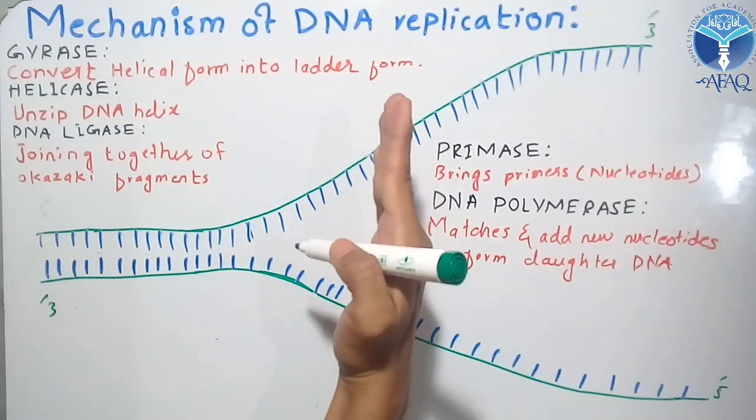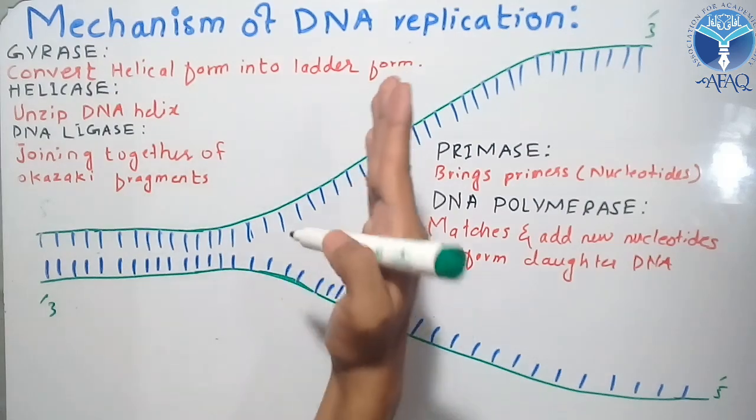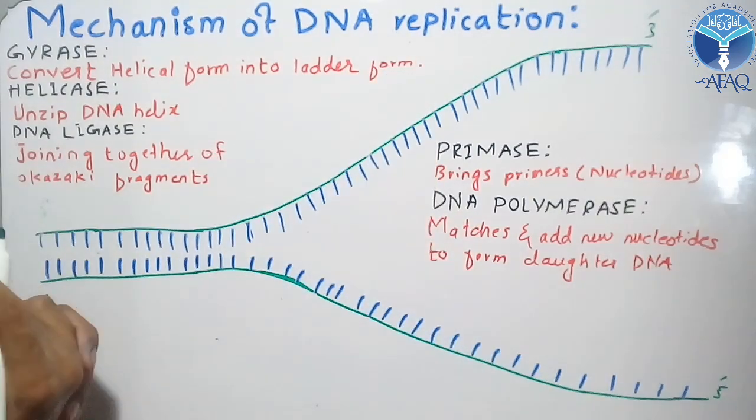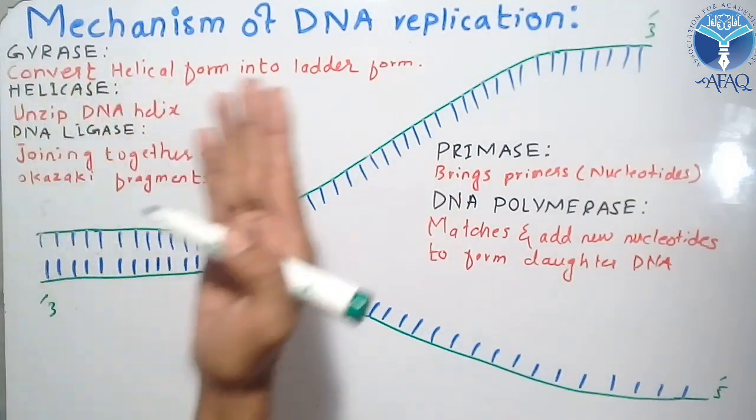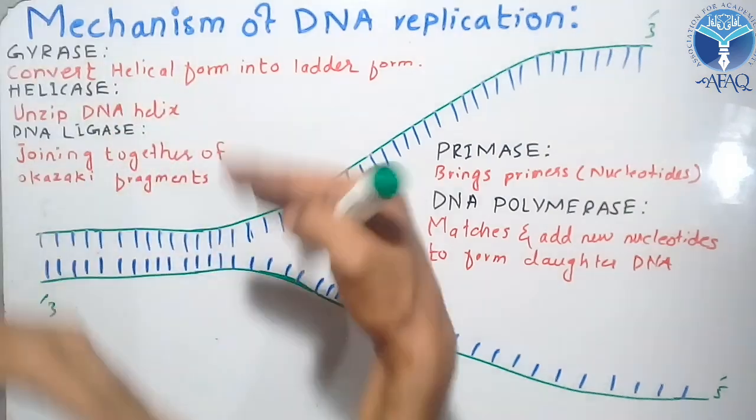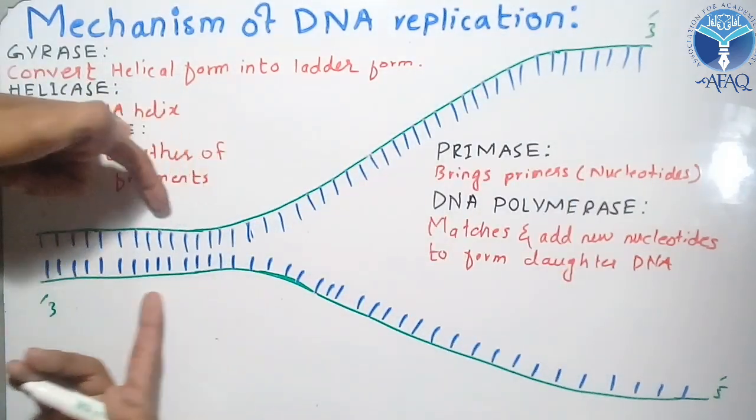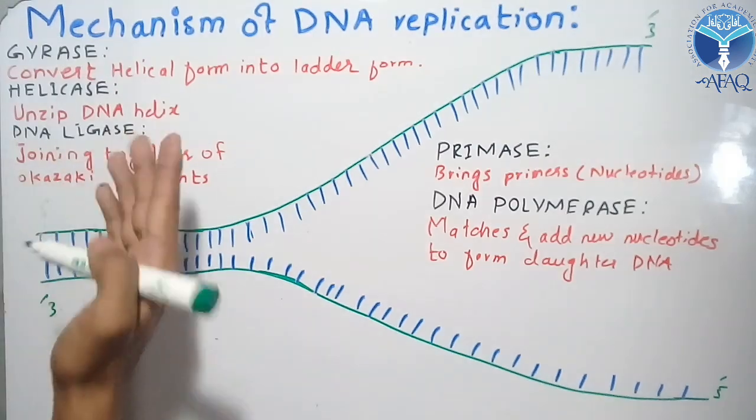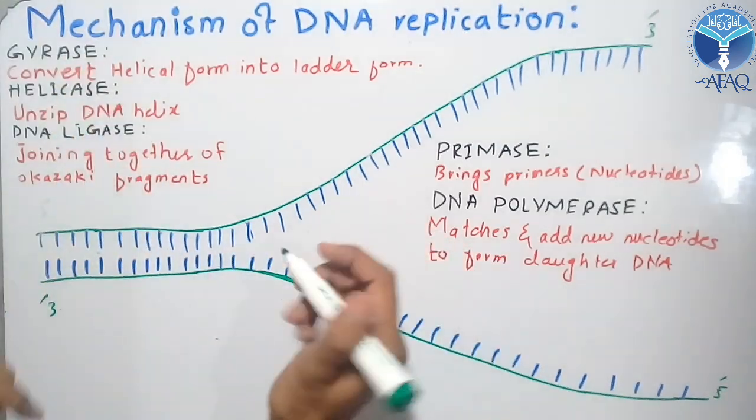DNA replication involves 5 main enzymes. The first is gyrase. The function of gyrase is to convert the helical form into the ladder form. You can see the ladder form here.